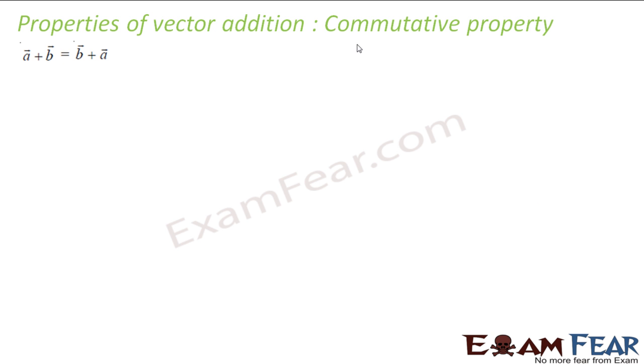So first is the commutative property. It says that you have two vectors a and b. You say a plus b, you get this vector or you say b plus a. For example, you have b vector, on this you are adding a vector, you get this vector. Both are same.